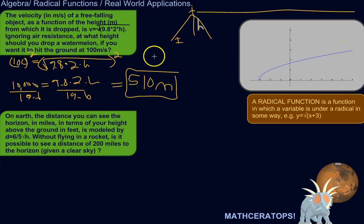Alright, without flying in a rocket, is it possible to see a distance of 200 miles to the horizon? You know, assuming a clear sky, the haze doesn't cut off your view, et cetera.